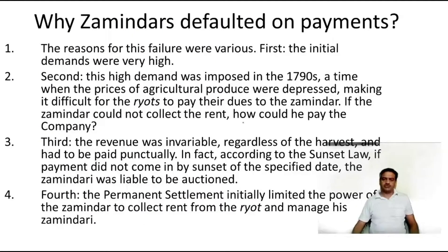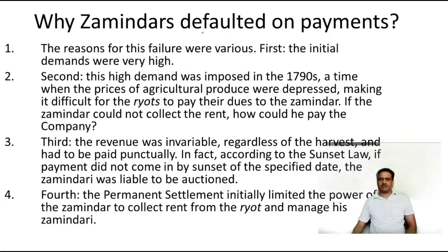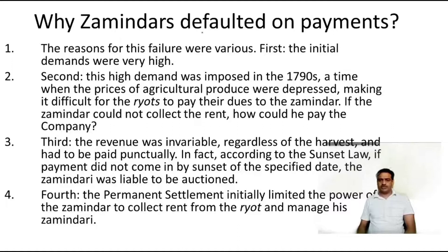Why did Zamindars default on payment? Though they were very rich, there may have been some faults in the permanent revenue policy. What were those faults? The first reason is that the initial demand of the revenue was very high.